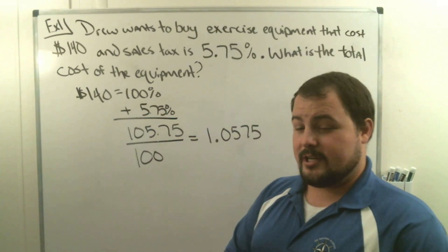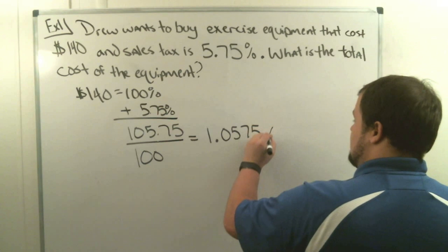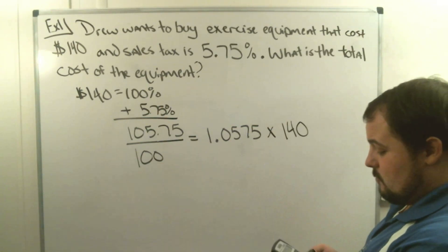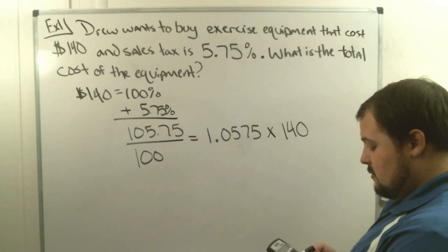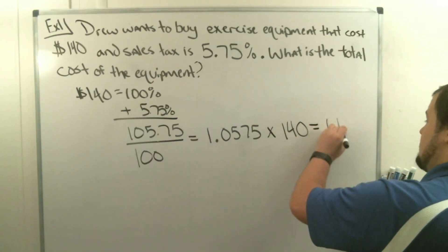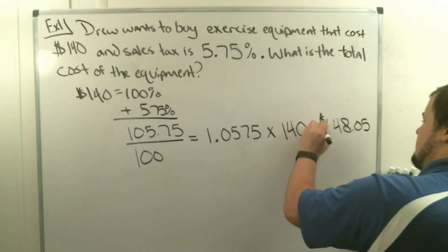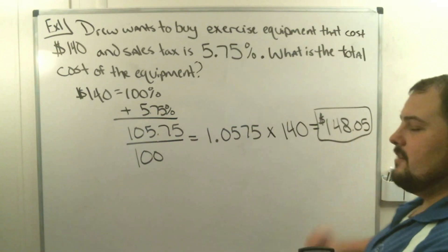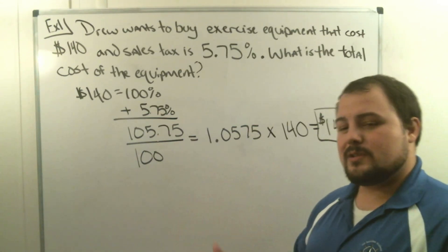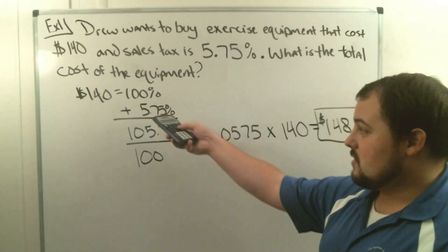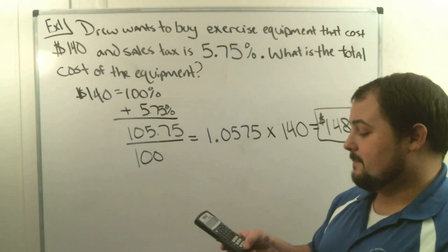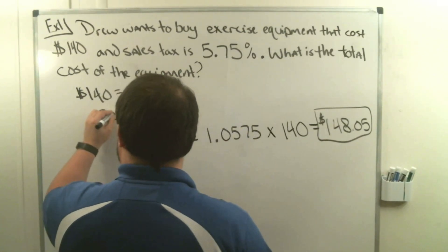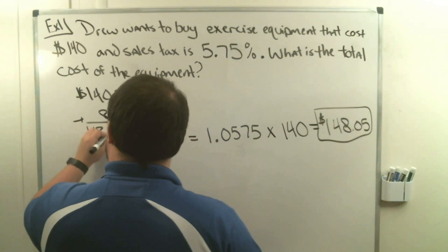So 105.75% as a decimal is 1.0575. All we have to do to figure out the total price is take our percent as a decimal and multiply it by the original price of $140. Typing 1.0575 times 140, we get a total price of $148.05. We can verify this: 5.75% divided by 100 is 0.0575, times 140 equals $8.05 in tax, and $140 plus $8.05 equals $148.05.